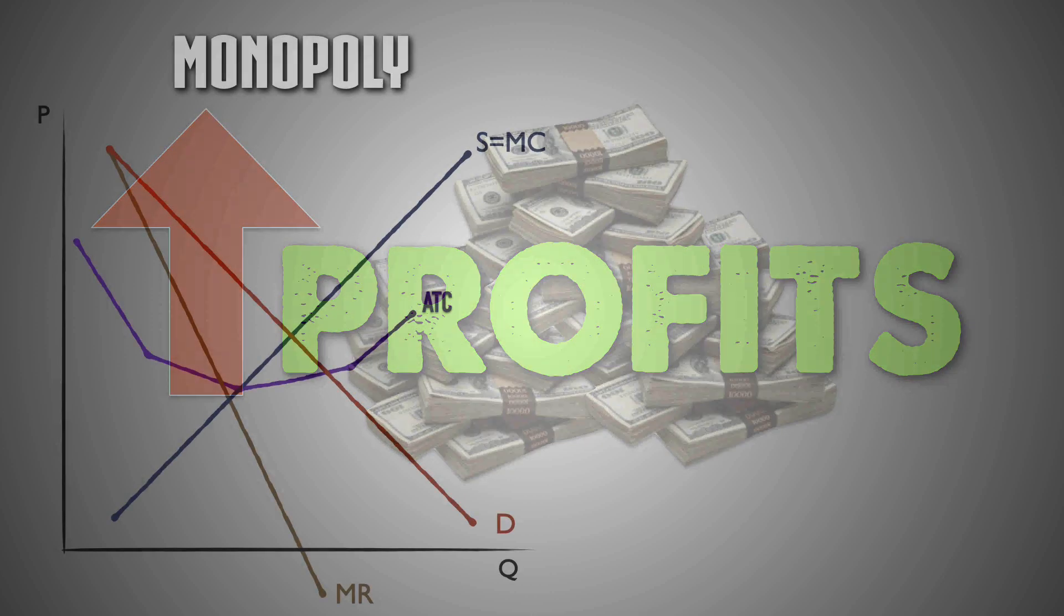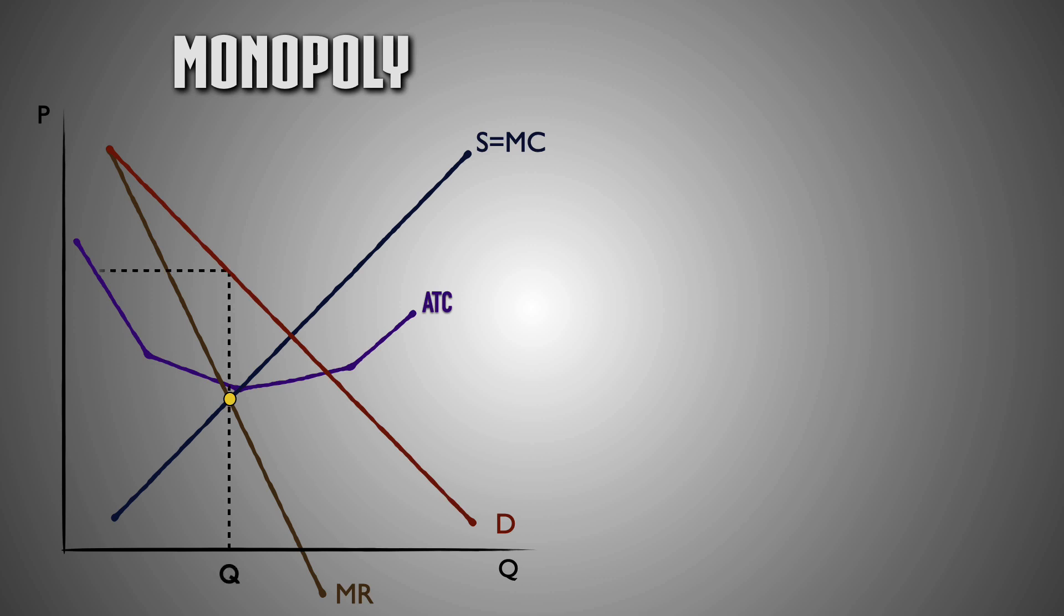So what motivates a monopoly to price discriminate? Well, for one thing, price discrimination increases the economic profits earned by the firm. A pure monopoly produces a limited output and charges a single market price to all consumers. Buyers who are willing and able to pay that price can purchase economic goods to meet their needs and wants, while those who can't afford the monopoly price are priced out of the market and left with unsatisfied utility.